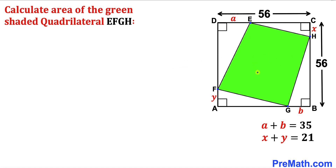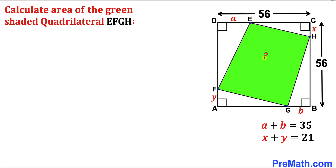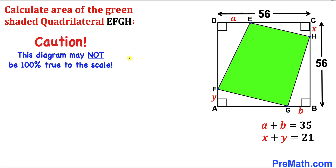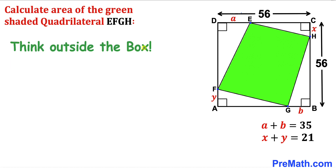Welcome to pre-math. In this video we have a square ABCD with side length 56, such that this green quadrilateral EFGH is inscribed in it. Moreover, the sum of line segments A and B is equal to 35, and likewise the sum of line segments X and Y equals 21. We are going to calculate the area of this green shaded quadrilateral EFGH. Please don't forget to give a thumbs up and subscribe. Note that this figure may not be 100% true to scale as we are dealing with a tricky problem.